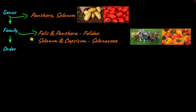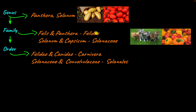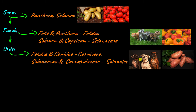The next taxonomic rank is order, which includes a collection of closely related families. Panthera and Felis belong to the family Felidae, which along with the family Canidae is classified in the order Carnivora. Canidae includes all dogs, so dogs and cats are classified under the same order Carnivora — sharing the common character of being carnivores. The family Solanaceae is classified under the order Solanales, along with the family Convolvulaceae, which includes species like sweet potato.